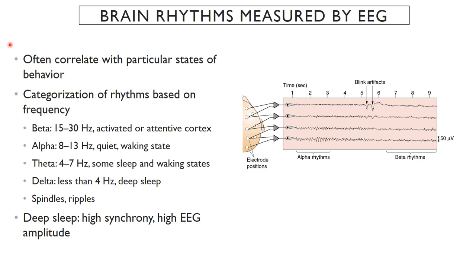We do see brain rhythms when people are awake as well, in particular when associated with certain states of behavior. The rhythms will change depending upon what people are doing. The major rhythms are categorized by the frequency of the deflections. Beta rhythm is the fastest frequency, seen when the cortex is activated or someone is paying attention — around 15 to 30 Hz.